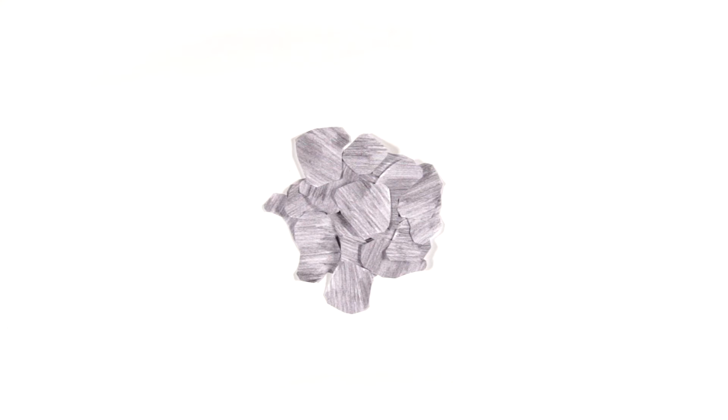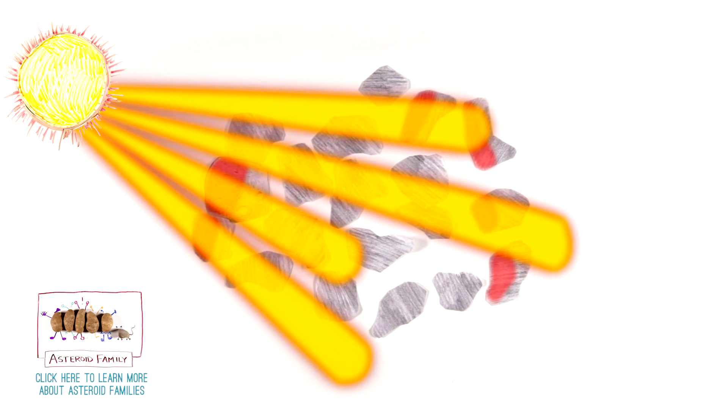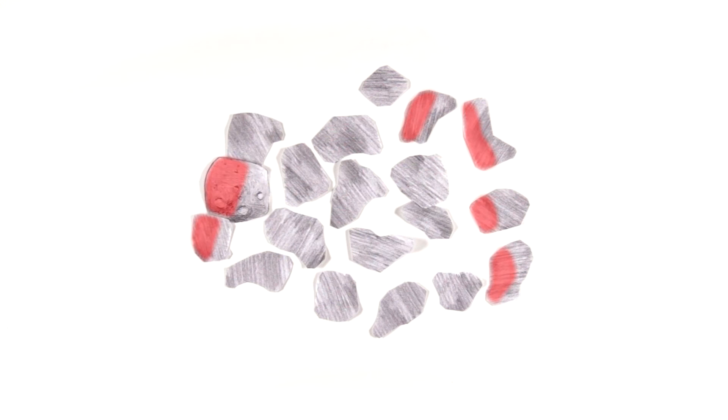Then another asteroid got in the way, and after a big collision, all that was left of the giant asteroid was Bennu and a bunch of other fragments, called a family. Those fragments slowly spread out because of the push of sunlight due to the Yarkovsky effect, until some of them, including Bennu, escaped the asteroid belt and headed toward the Earth.